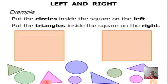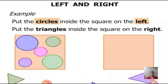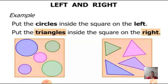Let's do the activity. All the circles I have put in one square which is to your left hand side. And now we will put all the triangles inside the square on the right hand side. Here we have done our activity - we can see the circles inside the square on the left hand side, and the triangles inside the square on the right hand side.